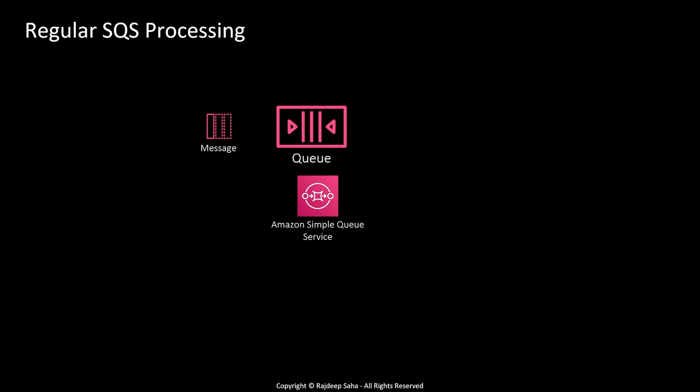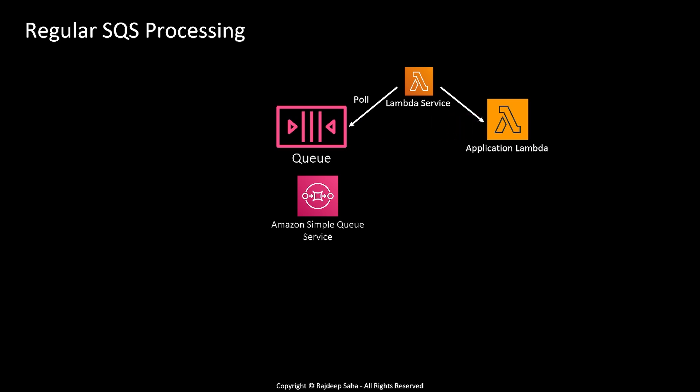Let's understand how Lambda processes SQS messages. If you have an SQS queue hooked up to a Lambda, the Lambda service — not your application code, but the internal AWS Lambda service — periodically pulls this queue. If a message is found, this Lambda service invokes your actual application Lambda and passes those messages. The message gets processed, and once successfully processed, the message is deleted.